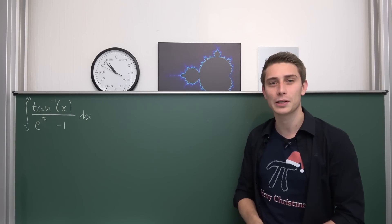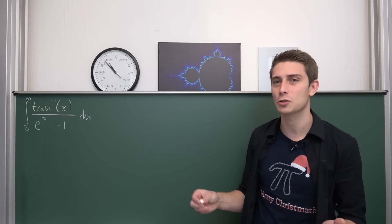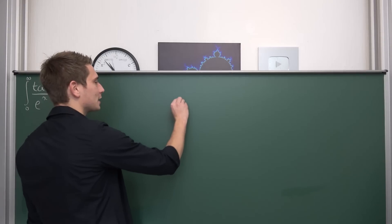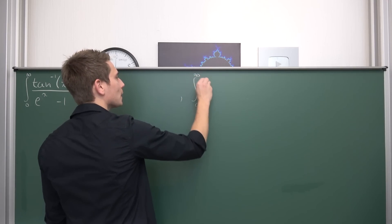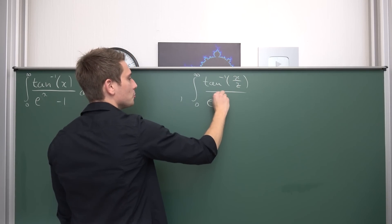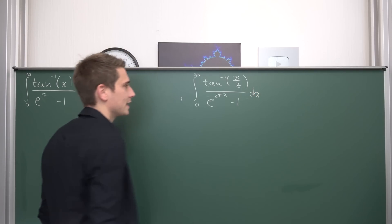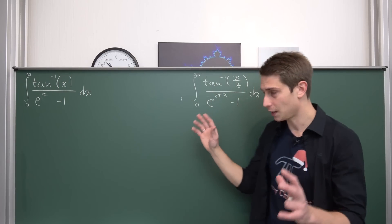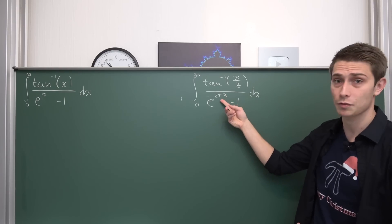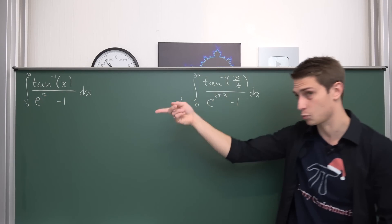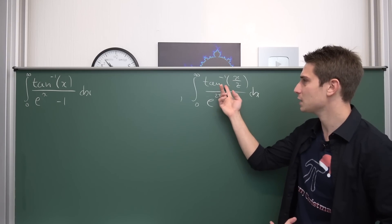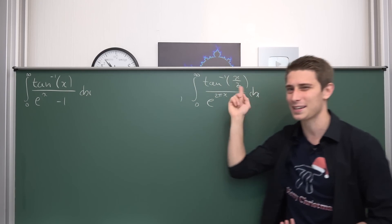Before we get into the main thing, I would like to take a look at a kind of different integral that we can manipulate into what we have here. So at first I would like to take a look at the integral from 0 to infinity of the inverse tangent of x over z, divided by e to the 2π power x minus 1, integrated with respect to x. You might notice a few similarities: we have an inverse tangent over some exponential function. The argument in the inverse tangent is x over z, and in the exponential we have 2π times x — so we need to get rid of that 2π factor.